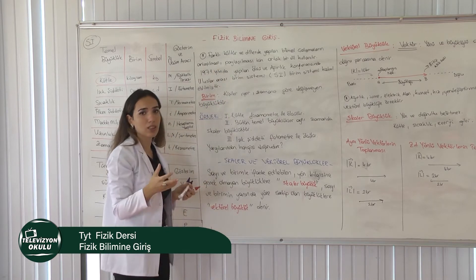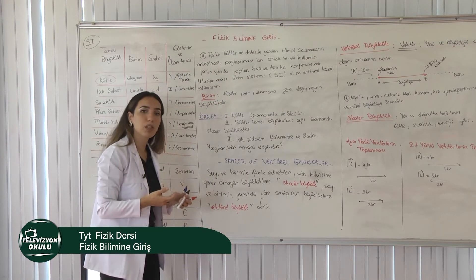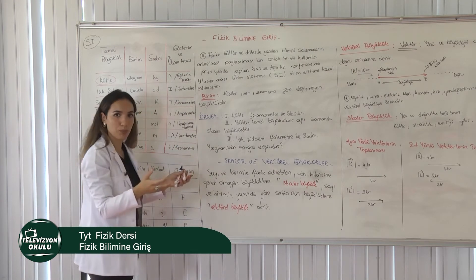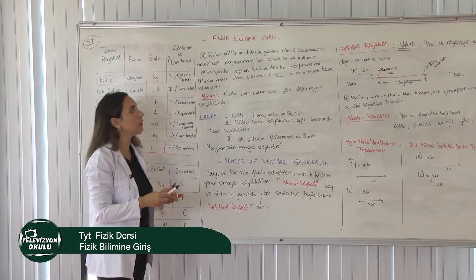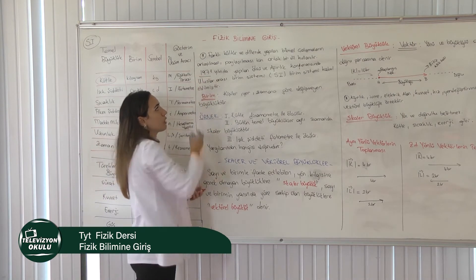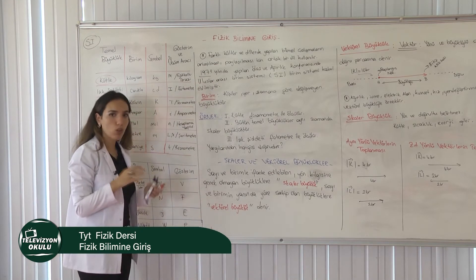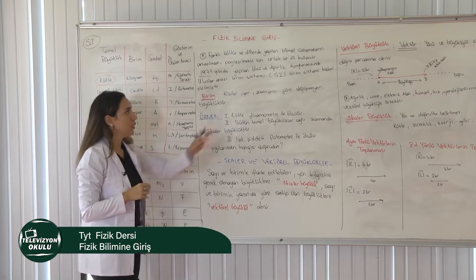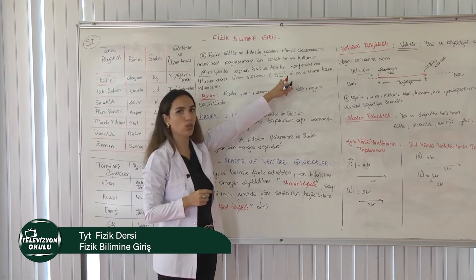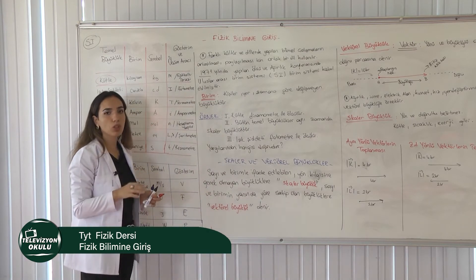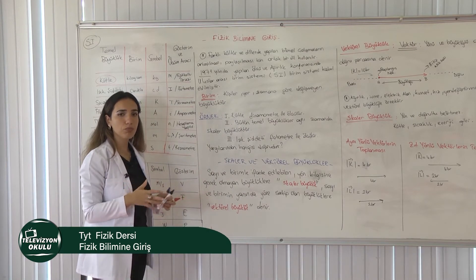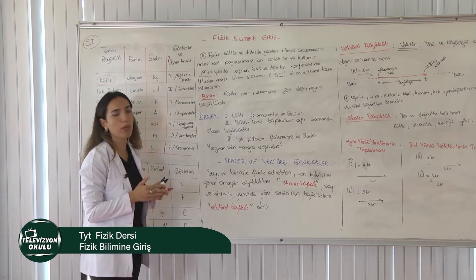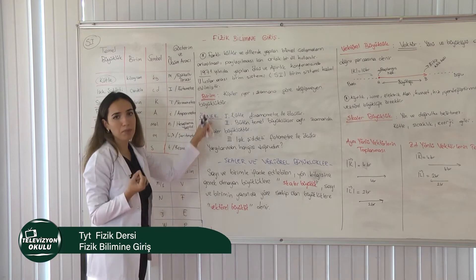Farklı kültürlerde, farklı dillerde yapılan bilimsel çalışmaları ortak bir paylaşımda bulunduğumuzda herkesin anlaması gerekiyor. Dolayısıyla 1971 yılında yapılan ölçü ve ağırlık konferansında uluslararası birim sistemi dediğimiz SI birim sistemi kabul edildi ve buna göre yayınlandı. Yapılan bütün deneyler, yapılan ölçümler bu sisteme çevrilerek ortak bir şekilde paylaşılıyor.